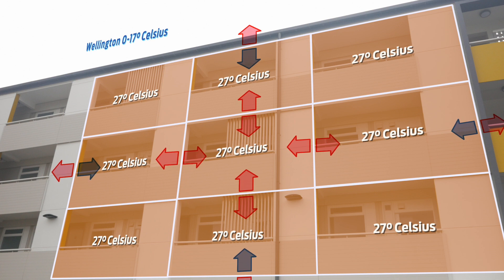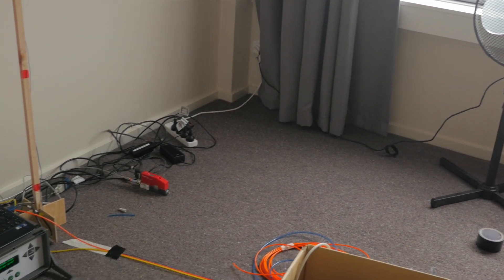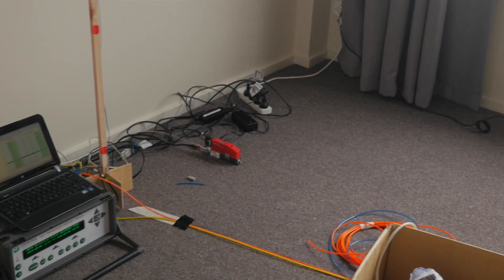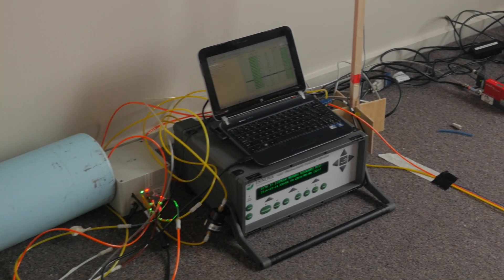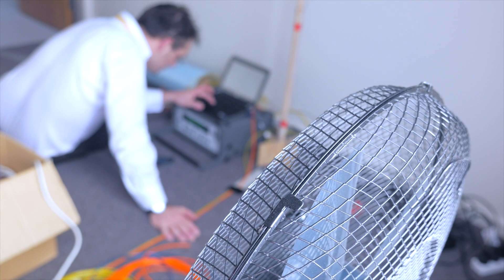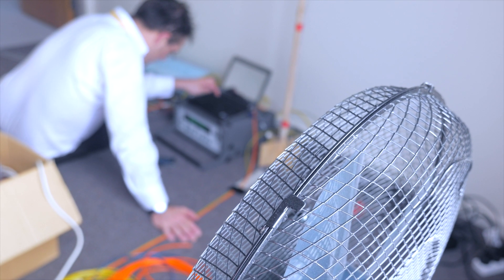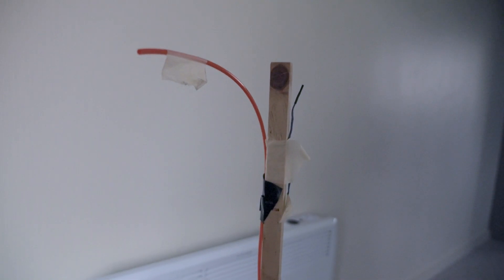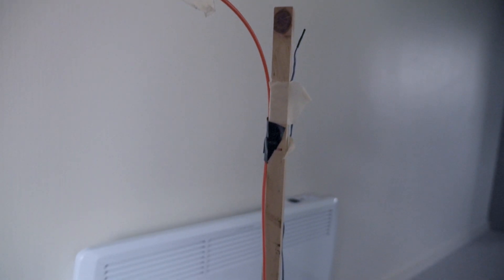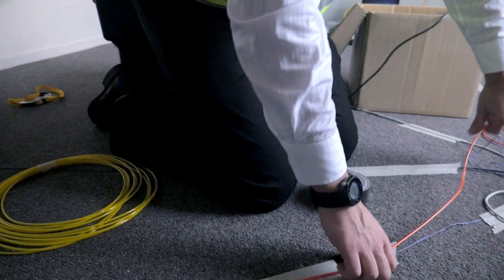We're actively using this computer system here to control the temperature inside the apartment to this set point. We've got fans that are mixing the air, making sure we're getting a consistent temperature across the apartment, and an array of thermocouples spread around the building so we can actually make sure that we are getting that consistent temperature.